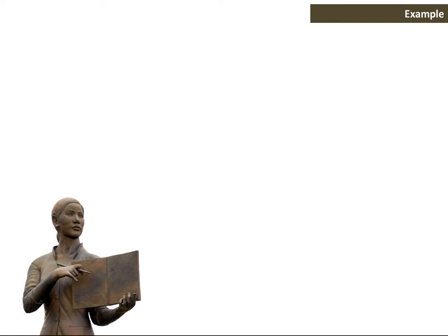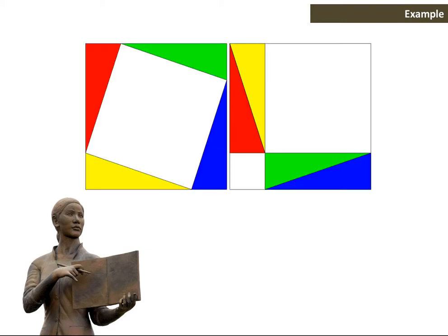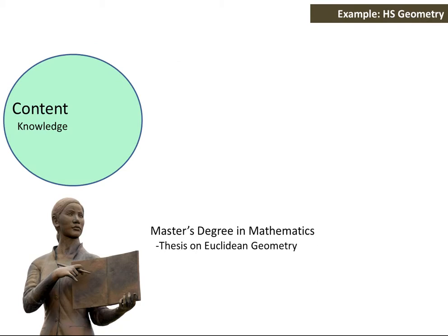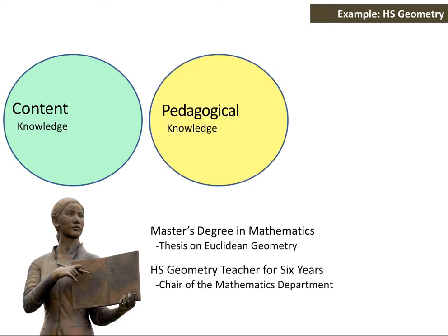Let's take an example. This is Laura. She teaches geometry at the high school level. In terms of her content knowledge, she has a master's degree in mathematics and did her thesis on Euclidean geometry, so she's highly competent. For pedagogical knowledge, she has six years of teaching geometry at the high school level and is also the chair of the mathematics department — things that correlate with strong pedagogical knowledge.